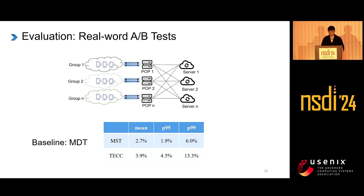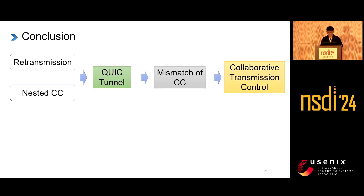We also validated TCC's effectiveness in real-world A-B tests. We deployed tunnel servers at many points of presence, and different users chose the nearest point to establish a tunnel connection. We implemented three types of solutions — MDT, MST, and TCC — using MDT as the baseline. Results show that TCC achieves a 30% improvement at the 99th percentile.